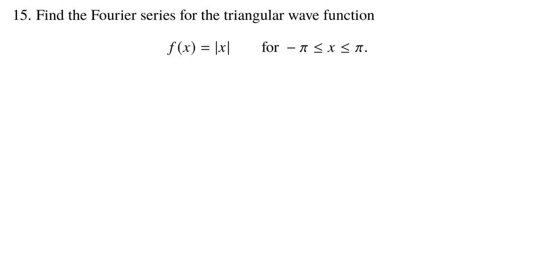Hello and welcome to our video for problem 15 for my spring 2020 final exam. Here we're given the absolute value function, although only defined between negative pi and pi, and we're asked to find the Fourier series for it.